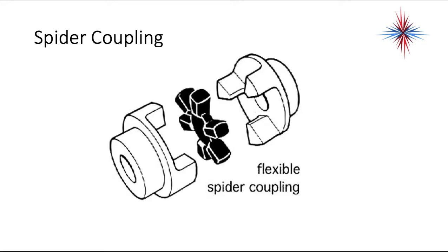A spider coupling is a flexible coupling that allows, if for some reason it seizes up, it allows the motor to be disconnected. Your motor would be mounted here, your blower wheel would be mounted here, and there's a flexible coupling in here that helps with vibration. If something fails or seizes up, you're not going to burn out a motor.